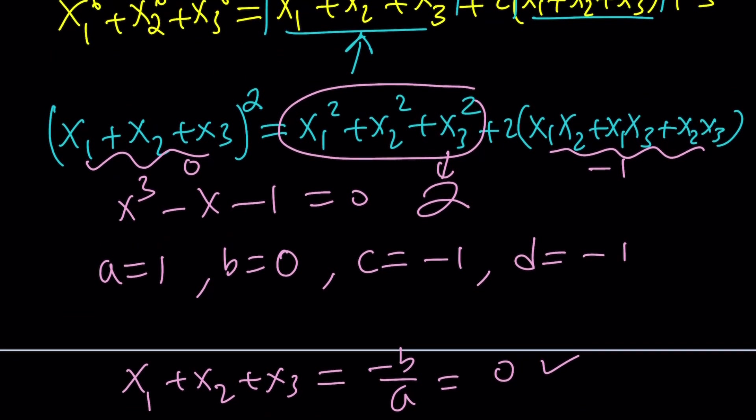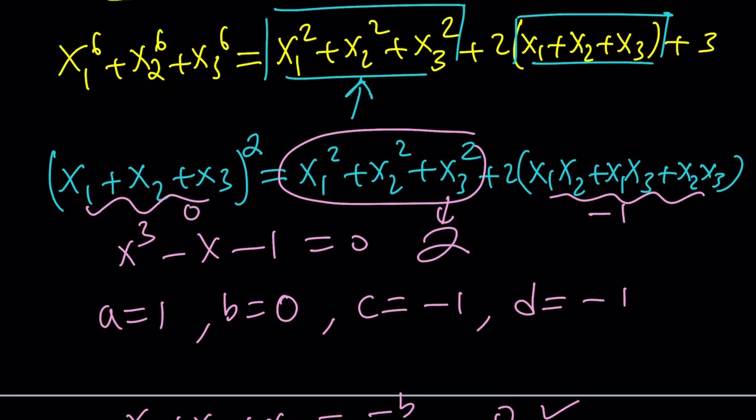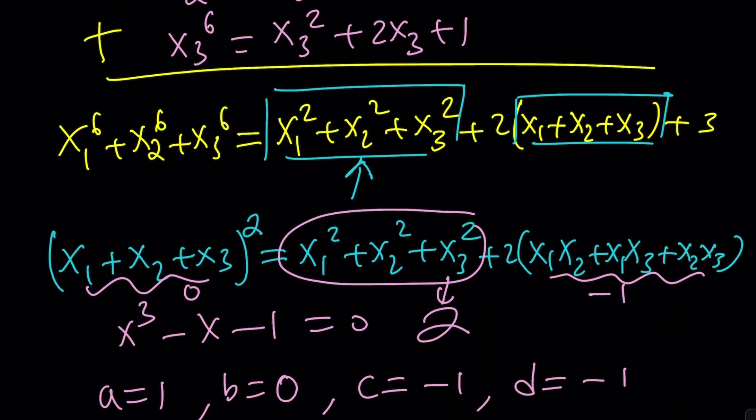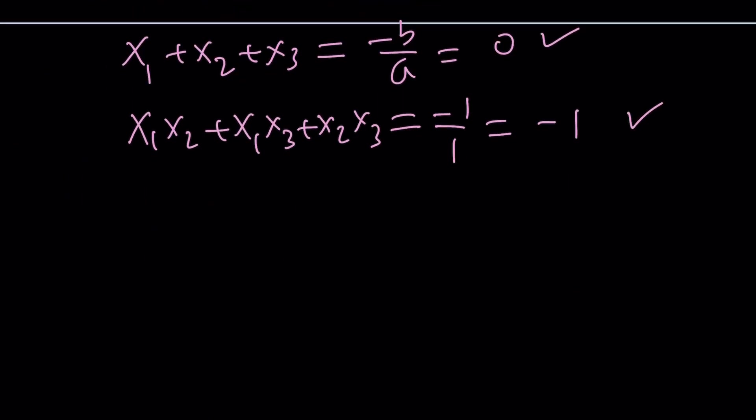And then we also need to use the other identity. We need the sum. This is going to be 0, and this is going to be a 2 from here, right? So we're going to cancel this out, and the sum of the six powers is going to be 2 plus 3. It's as easy as 2 plus 3. After all this work, let's add these up, and it's going to be 5.